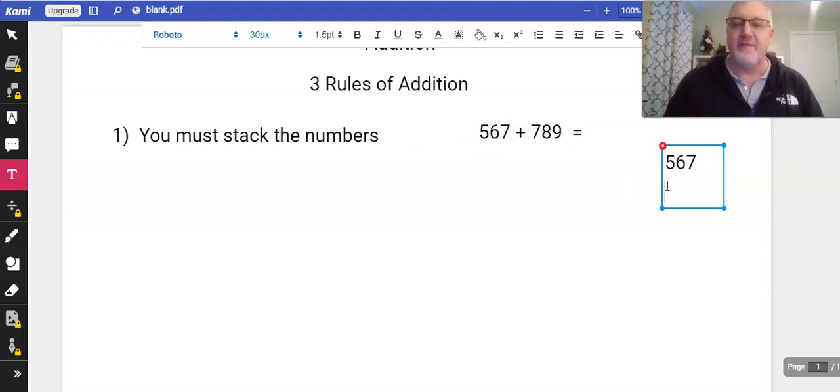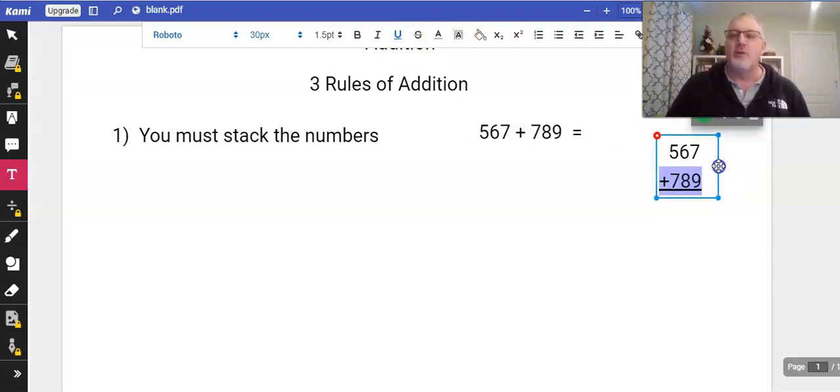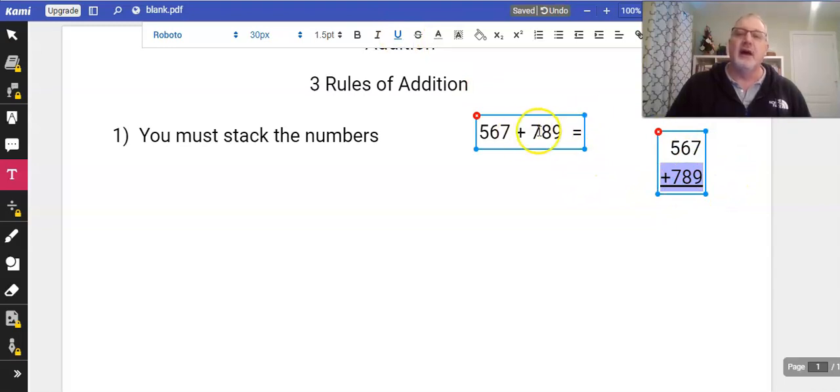What does that mean? Well, that means I'm gonna come over here and I'm just gonna do that: 567, and then I'm gonna stack it with that 789. You see that I need to stack those numbers so that I have a chance to actually add them correctly. We're gonna go ahead and underline it. This is how the problem should look, not this.